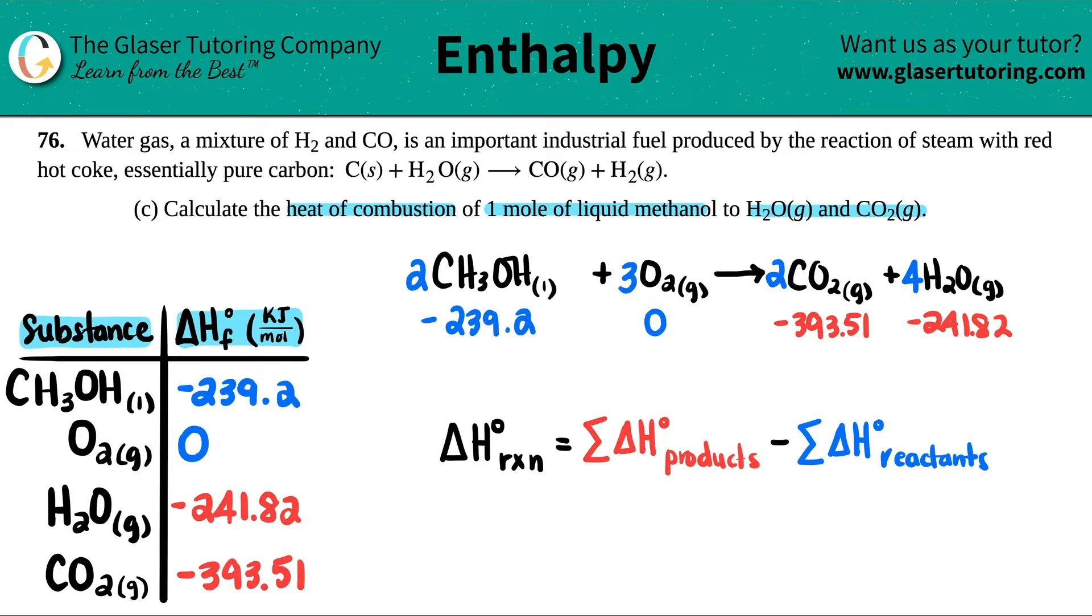I need to get one number for the left side and one number for the right side. We take the delta H values we found in the back of the textbook and multiply them by how many we have in the balanced equation. There were 2 methanols, so multiply by 2. There were 3 oxygens, so multiply by 3. There were 2 CO2s, so multiply by 2. And there's 4 H2Os, so multiply by 4. Now I need to sum them up. CH3OH plus O2, so I add these two numbers together. CO2 gas plus H2O gas, I add these two numbers together to get one single number.